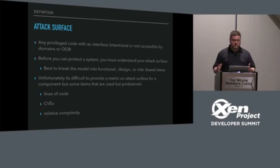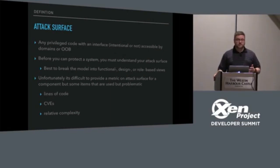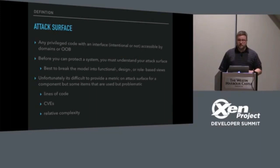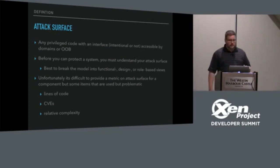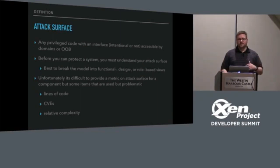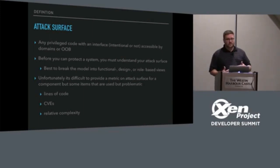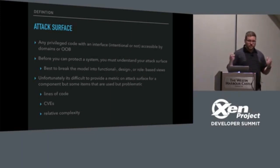Attack surface defined in the context of Xen is really any privileged code with an interface — intentional or not — that's accessible by domains or out of band, meaning DMA and things like that. Coming from the defense world, a lot of times the community is obsessed about attack surface but doesn't necessarily try to understand the system before they try to reduce the attack surface.